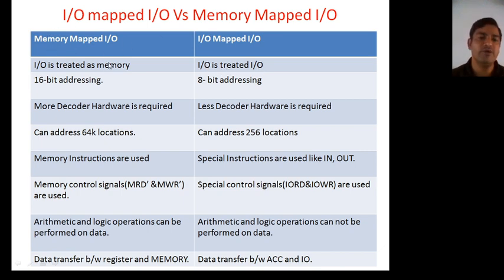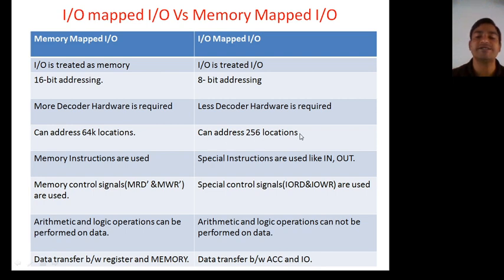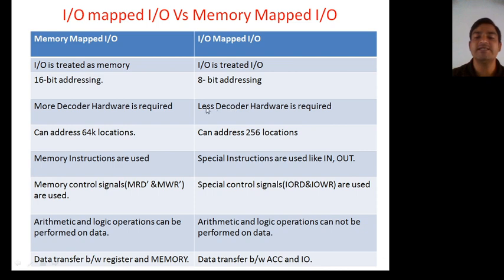In case of memory mapped I/O, there is 16-bit addressing, while for I/O mapped I/O, there is 8-bit addressing. The total memory capacity for memory mapped is 64K, that is 2 to the power 16. For I/O mapped it is 256, that is 2 to the power 8. Because address lines are from A0 to A15, more hardware is required for decoding in the memory mapped case, whereas less hardware is required for decoding in the I/O mapped case.